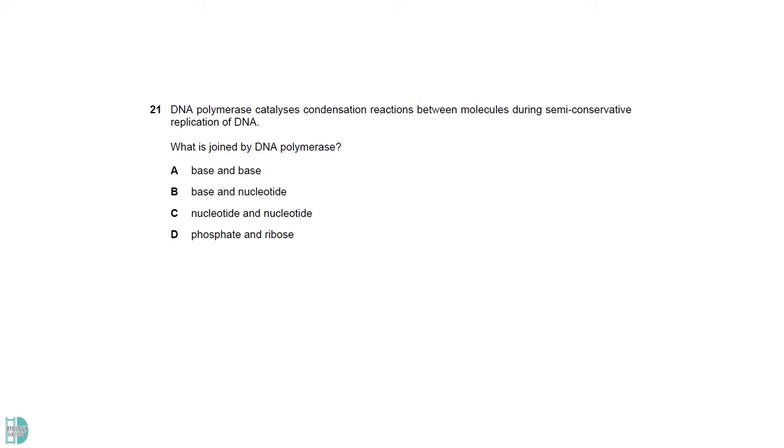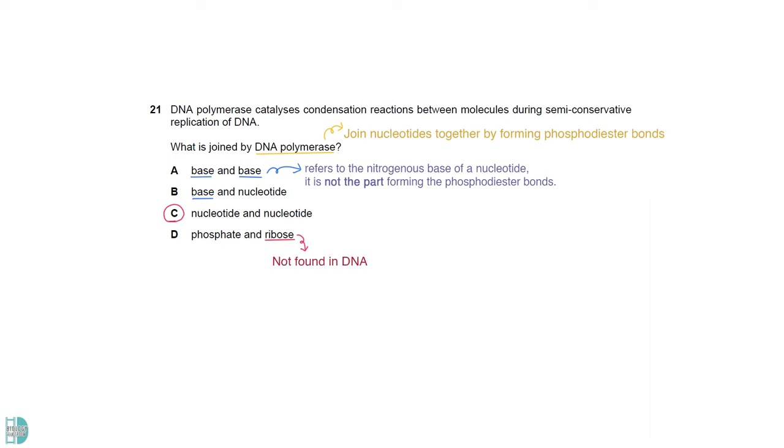DNA polymerase joins the nucleotides together by forming phosphodiester bonds. The term base only refers to the nitrogenous base of a nucleotide. It is not the parts forming the phosphodiester bonds. So A and B are out. D mentions ribose, which is not found in DNA. So it is incorrect as well.